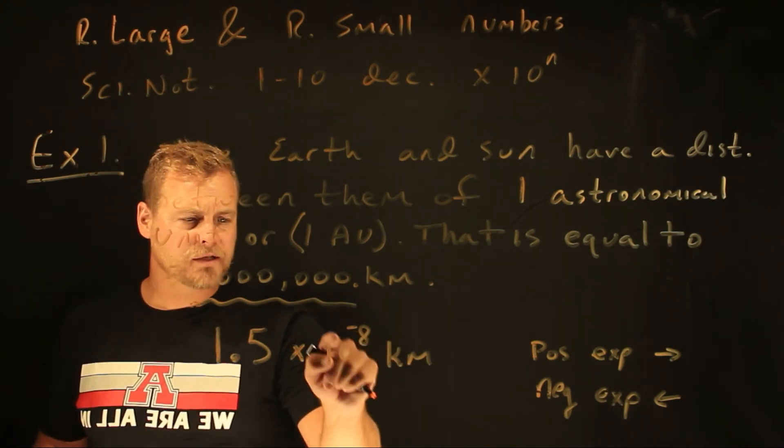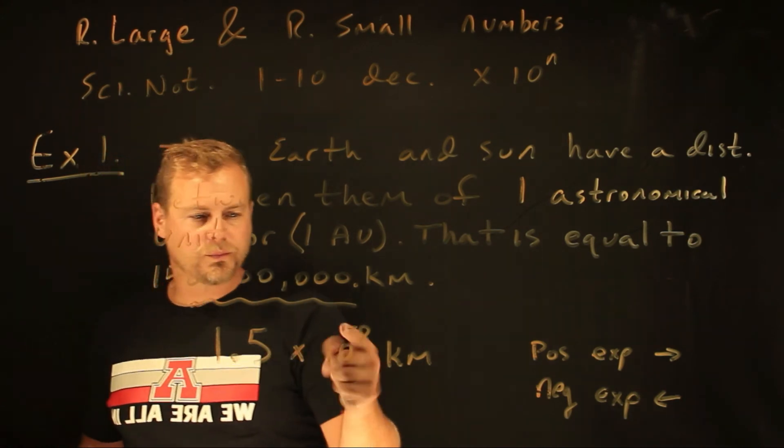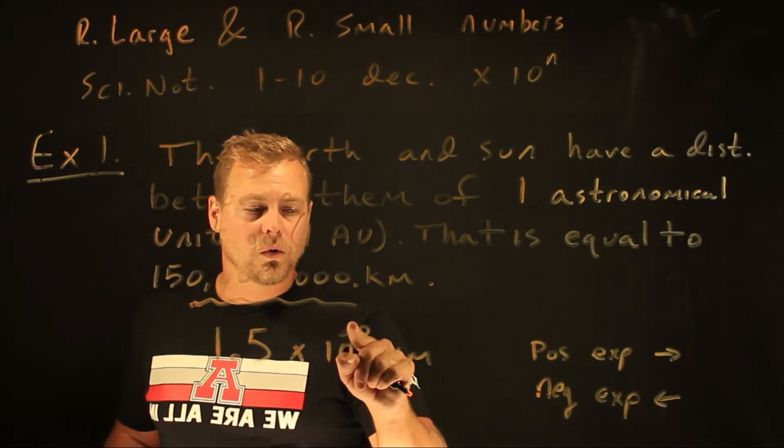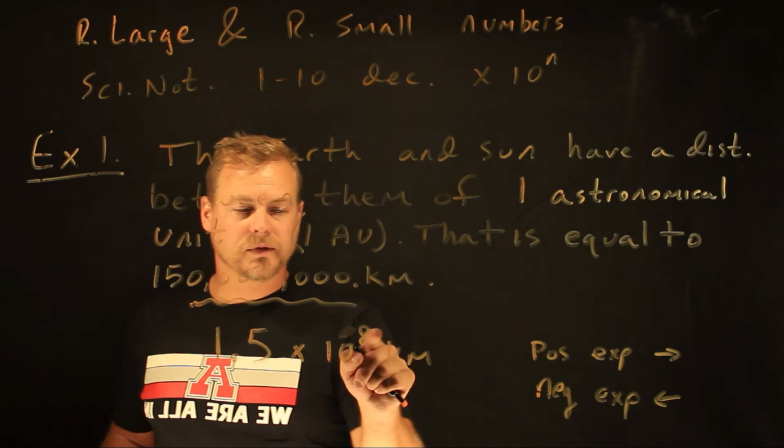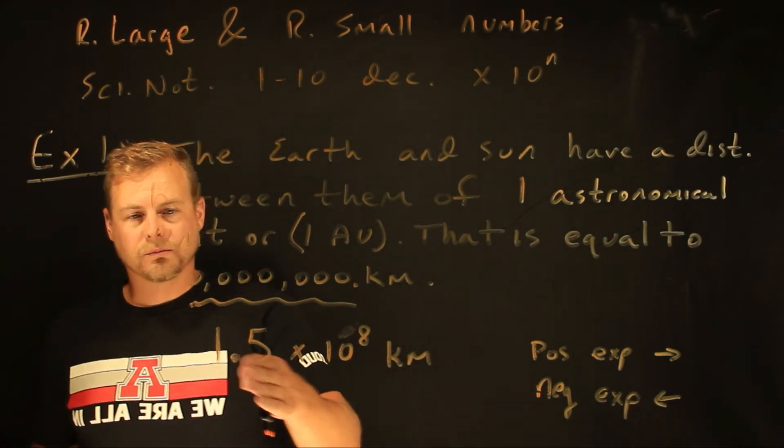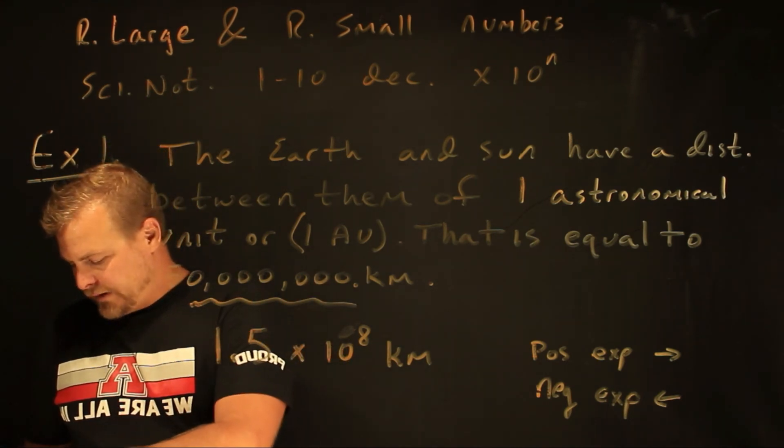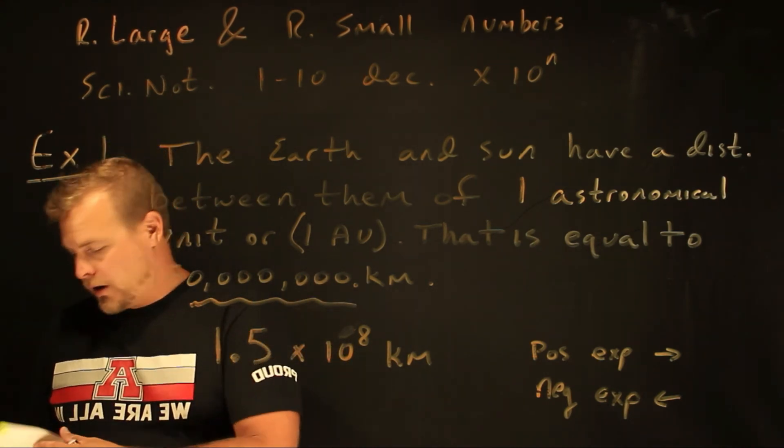So if the exponent's a negative, you're going to move that decimal to the left, which basically you're dividing it. Or if it's a positive number, like in this example, you're going to move the decimal to the right, which means you're multiplying it. You're making it a bigger number. So scientific notation is used to deal with really large, really small numbers.